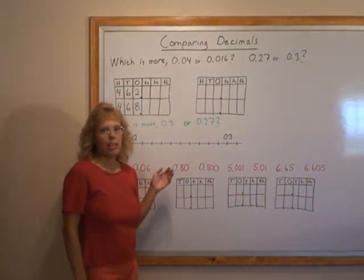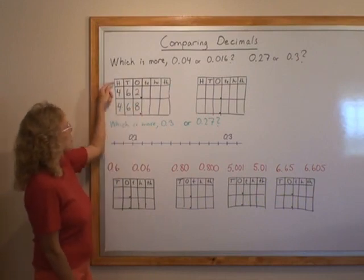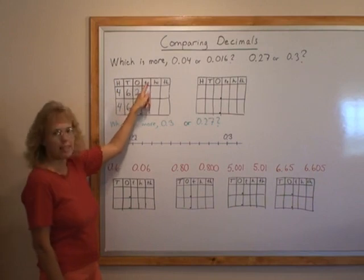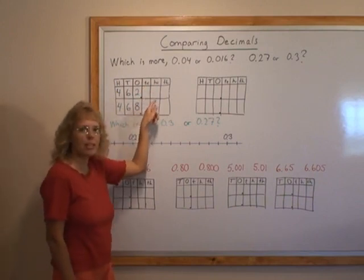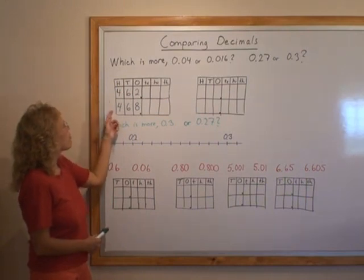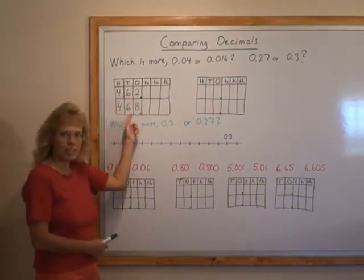I want to use place value charts. Here is a place value chart. This is hundreds place, tens place, ones place, tenths place, hundredths place and then thousandths place. I wrote two numbers here. These are whole numbers, 462 and 468.